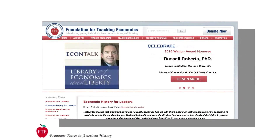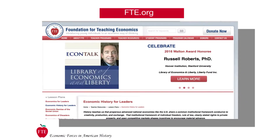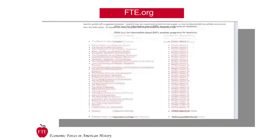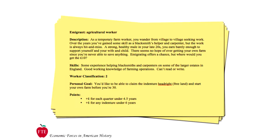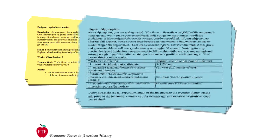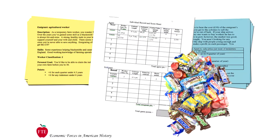The lesson plan for this activity is available at FTE.org, and it contains all the visuals, materials, and even a detailed historical background to help you prepare to facilitate this activity. You will need yellow emigrant cards for half of the students and blue agent cards for the other half, an individual record and score sheet for each student, and candy or some reward for students to purchase with their game points. You will also want to clear an open space in the room where the market can take place.